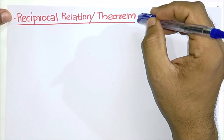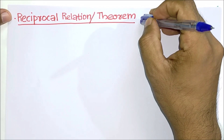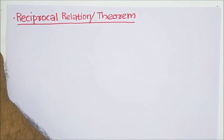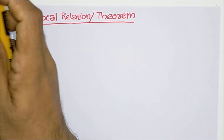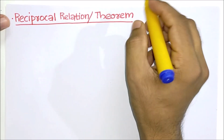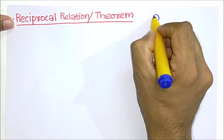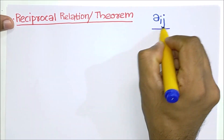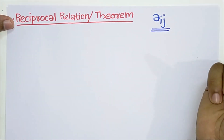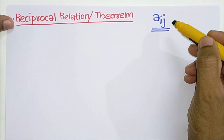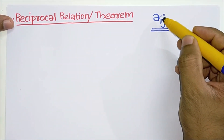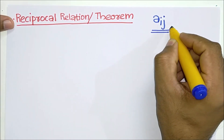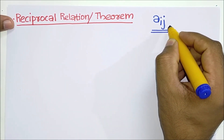We are going to study the 5th module now. We are going to study the influence coefficient and displacement. aij is represented as the influence coefficient of displacement at the i-th point due to a load at the j-th point.